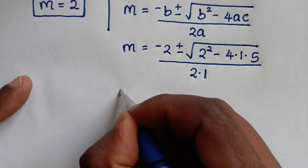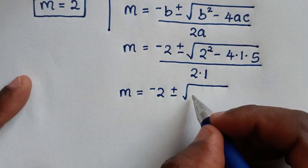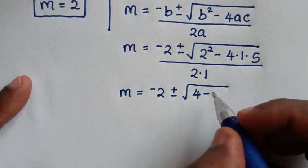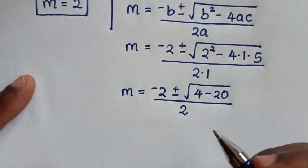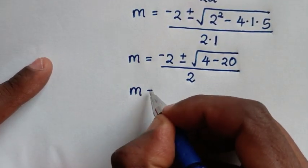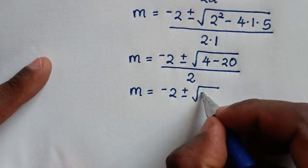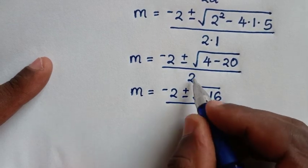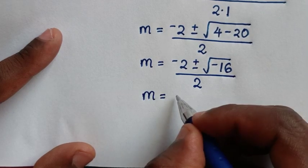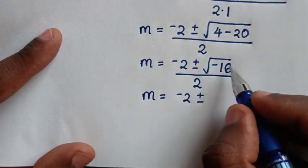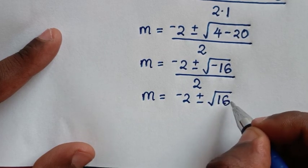Substituting: m = (-2 ± √(2² - 4×1×5)) / (2×1) = (-2 ± √(4 - 20)) / 2 = (-2 ± √(-16)) / 2. Now √(-16) is the same as √(16 × -1).